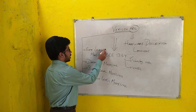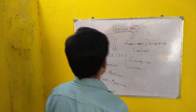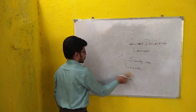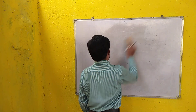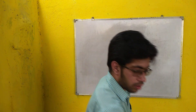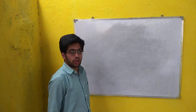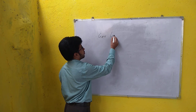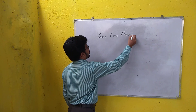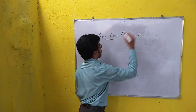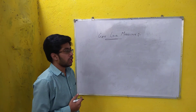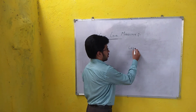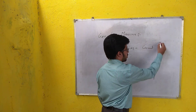Today we will be concentrating on Gate Level Modeling. Gate Level Modeling means implementation of the module in terms of logic gates and their interconnections. Before moving into Gate Level Modeling, there are two important things to understand: the first is the logical circuit, and the other is the truth table.